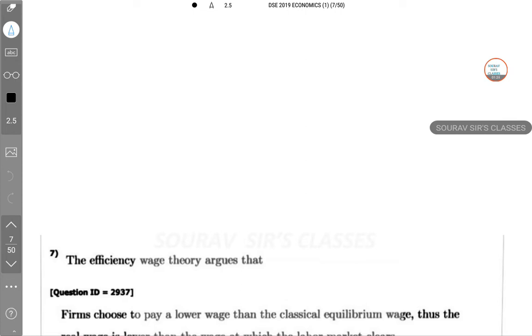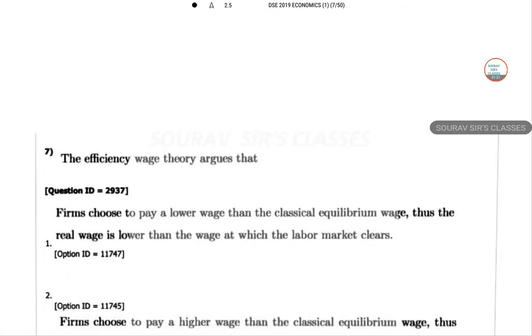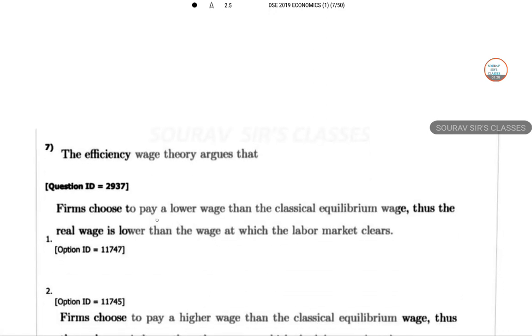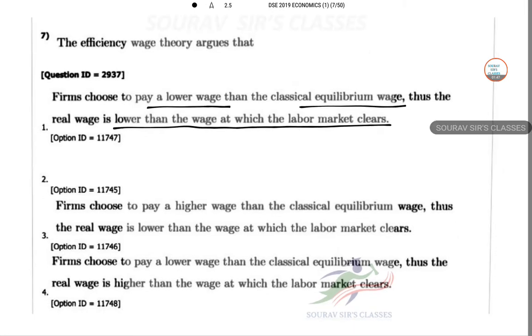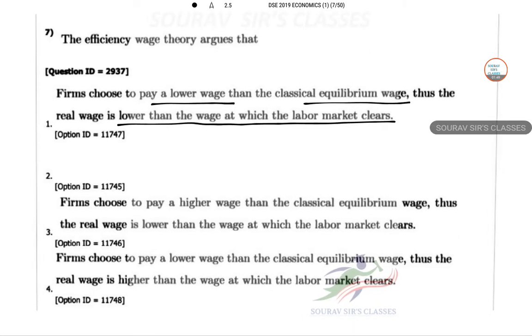The efficiency wage theory argues that firms choose to pay lower wage than the classical equilibrium wage. Thus the real wage is lower than the wage at which the labor market clears. So this is the benefit for the producer structure. So which one is this actually saying?